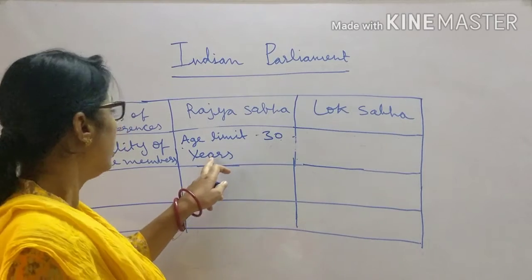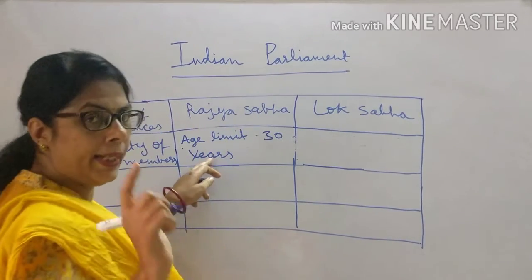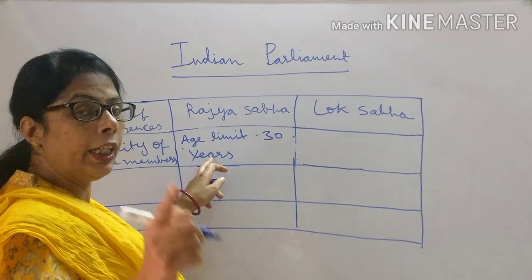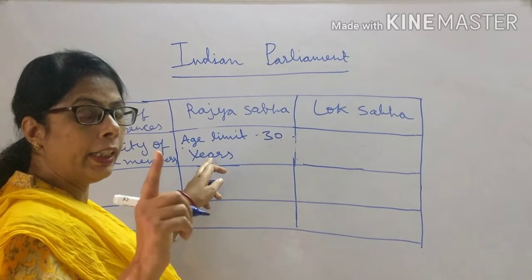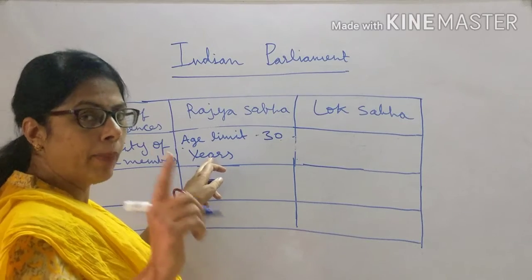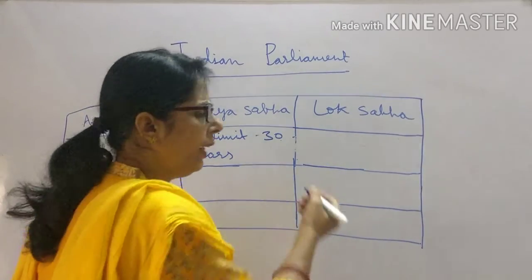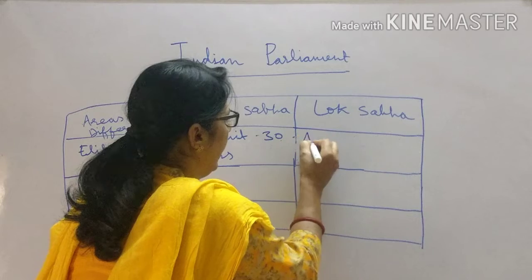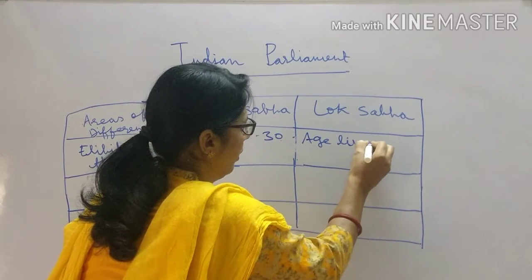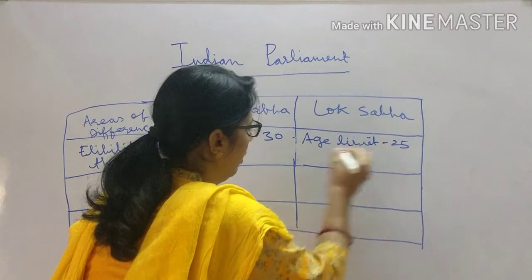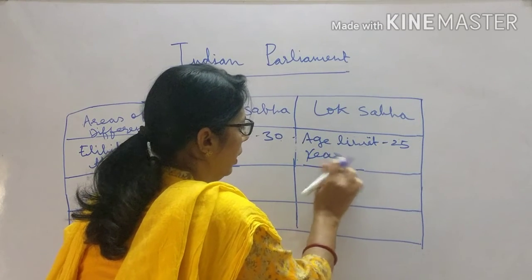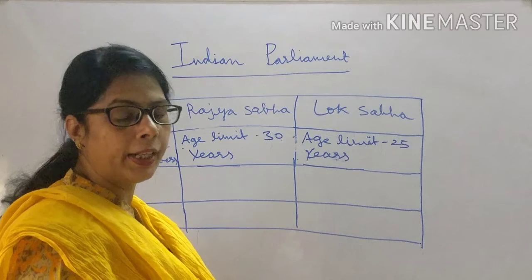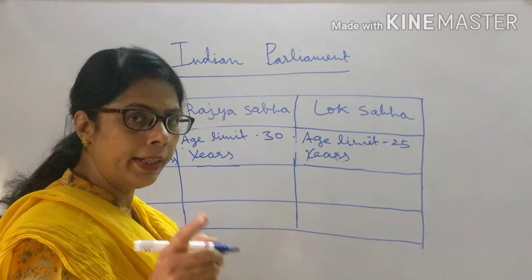Regarding eligibility of members: for Rajya Sabha the minimum age limit is 30 years. The member must be an Indian citizen, must not be bankrupt, and must not be convicted by any court. For Lok Sabha, all remaining qualifications are the same, but the minimum age limit is 25 years — the member must be an Indian citizen, must not be bankrupt, and must not be convicted by any court.